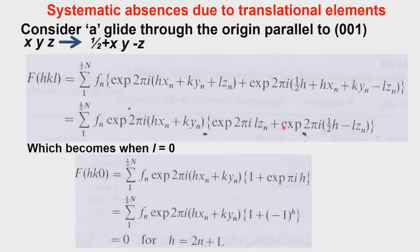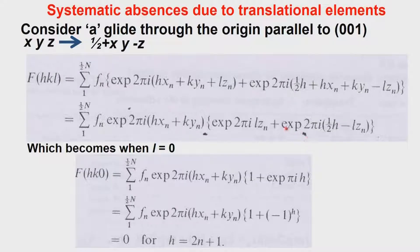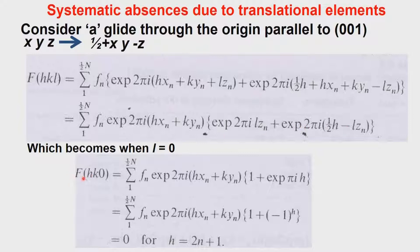This simplifies as a sum over 1 to n/2 of f_n × exp(2πi(hx_n + ky_n)) times [exp(...) + exp(...)]. In the previous case discussing the C-centered lattice, we had expressions involving only integers in the exponent. For an A glide parallel to 001, there are no general systematic absences. For example, for space group Pa, the primitive lattice gives no systematic absence for general reflections, but the A glide gives systematic absences when l is put equal to 0 — that is, for the projection reflections F(hk0).